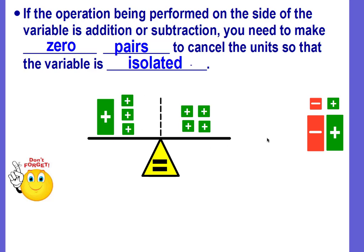We need to make zero pairs. You can't just erase the three. You have to make zero pairs. So if there are three positives, I need to have three negatives to cancel out the three positives.